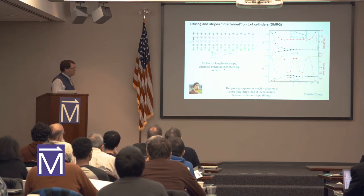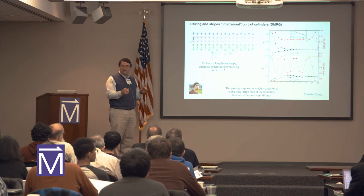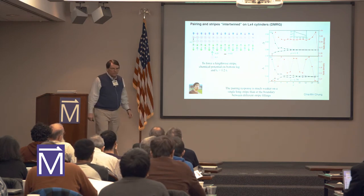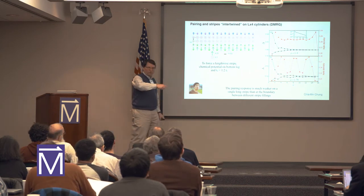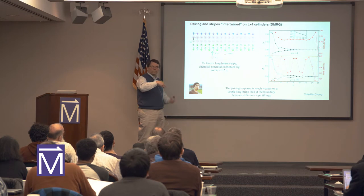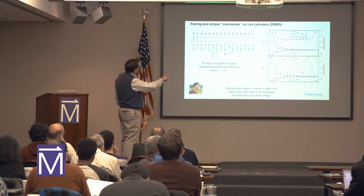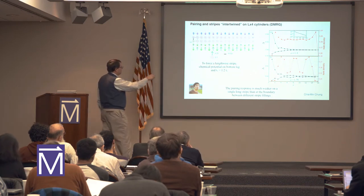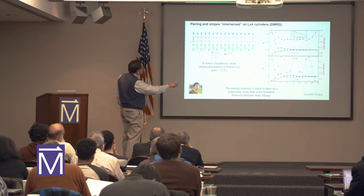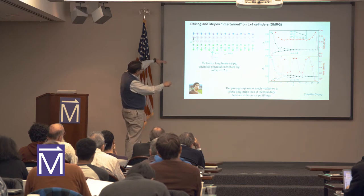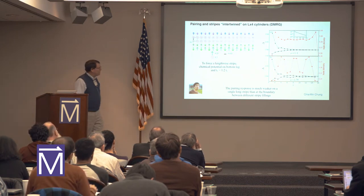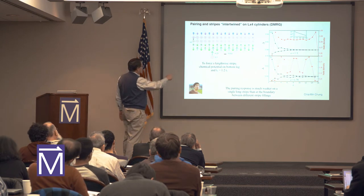We also looked at the pairing when you're just trying to look at a single stripe. The trouble with the stripes on the previous calculations was that they were wrapping around the cylinder — they had two or four holes and weren't a long stripe. We can't do a huge system, but we can do long systems. Here's a stripe constructed to run lengthwise along the cylinder. To make this stable, we put a chemical potential to keep the holes mostly off the bottom leg, and it's symmetrical because it's a cylinder. We increased the hopping in the x direction, which stabilized this lengthwise stripe.